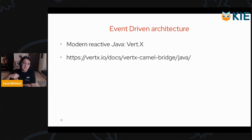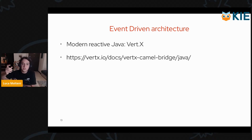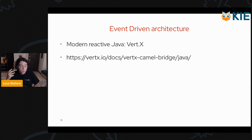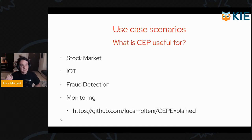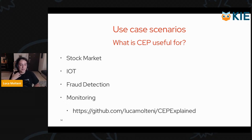Regarding the distributed transaction problem, we might have events that signal the services about eventual problems or errors in the process, so that each service can roll back its transaction independently, leading to a more robust distributed transaction mechanism. Modern reactive Java development — in some libraries like Vert.x, which is a famous framework for reactive applications in Java — also incorporates the idea of complex event processing. The idea of passing events is everywhere. Drools users are using CEP for stock market, IoT systems, fraud detection, and monitoring.